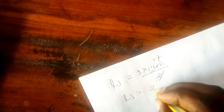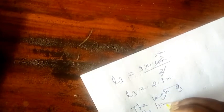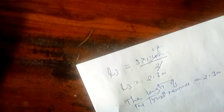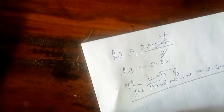L3 equals 3 times 1.4 meters divided by 2. When we divide by 2, we get 0.7. When we multiply, we get L3 equals 2.1 meters. Therefore, the length of the third resonance is equal to 2.1 meters. This is where the question ends.